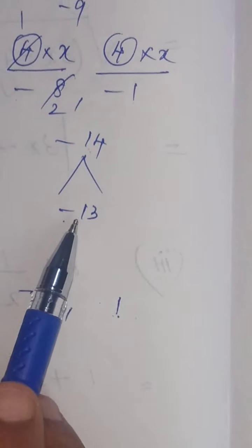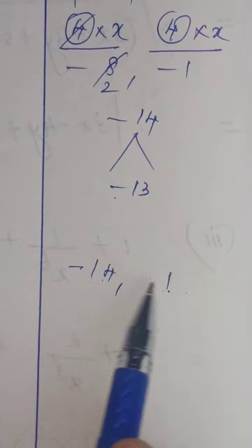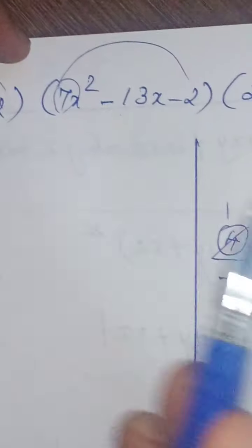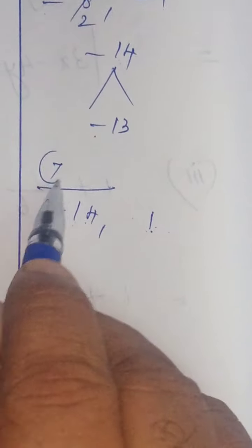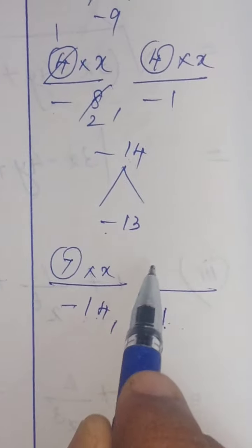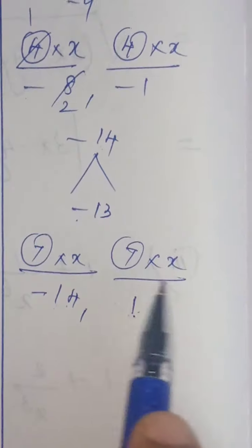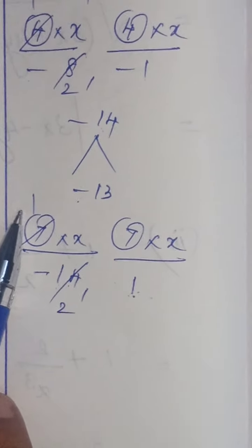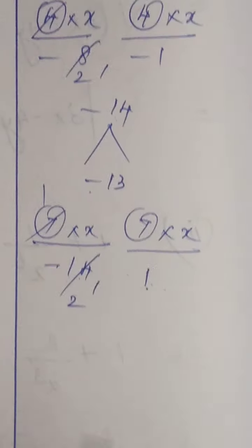Now, take the coefficient of x squared 7, 7 into variable x, 7 into variable x. So, the two factors are 1 into x, x minus 2, 7x plus 1.